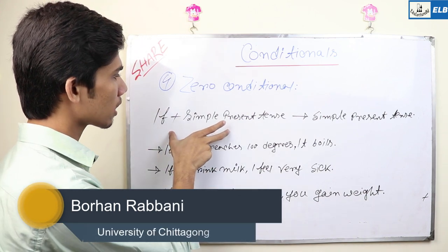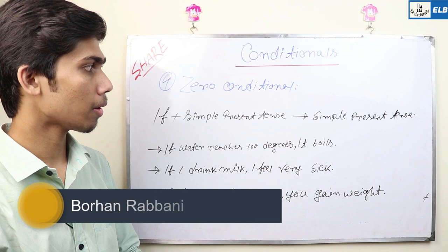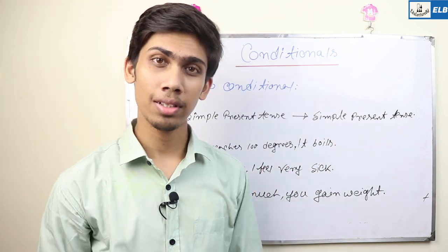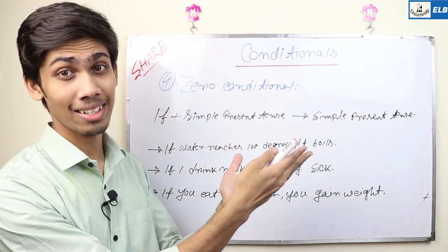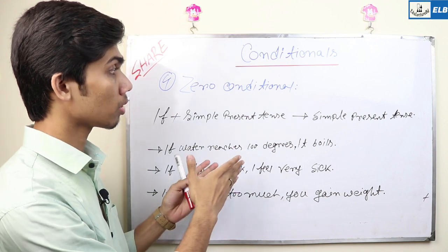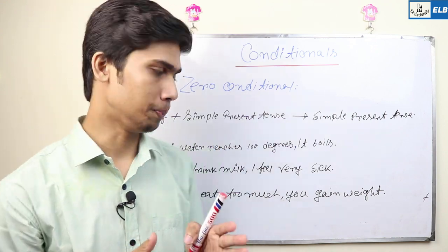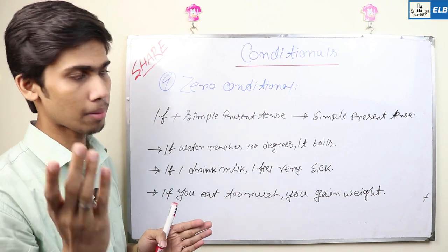If the sentence is a simple present tense, then the sentence is a simple present tense. There are two present tenses. The conditional is zero conditional. Let me show you an example.